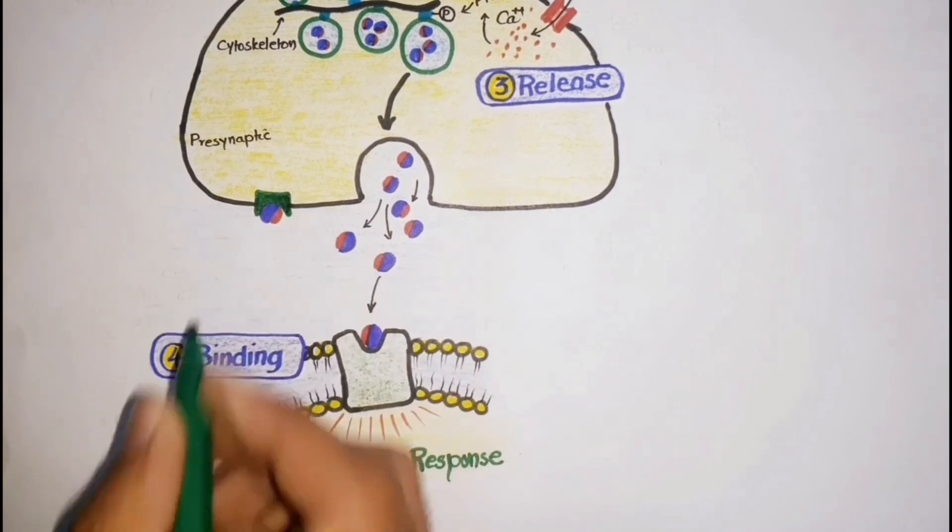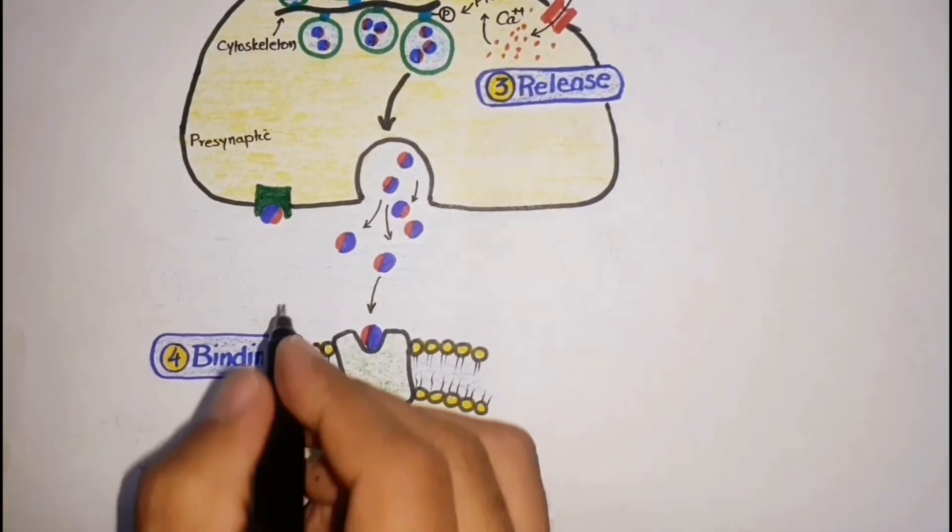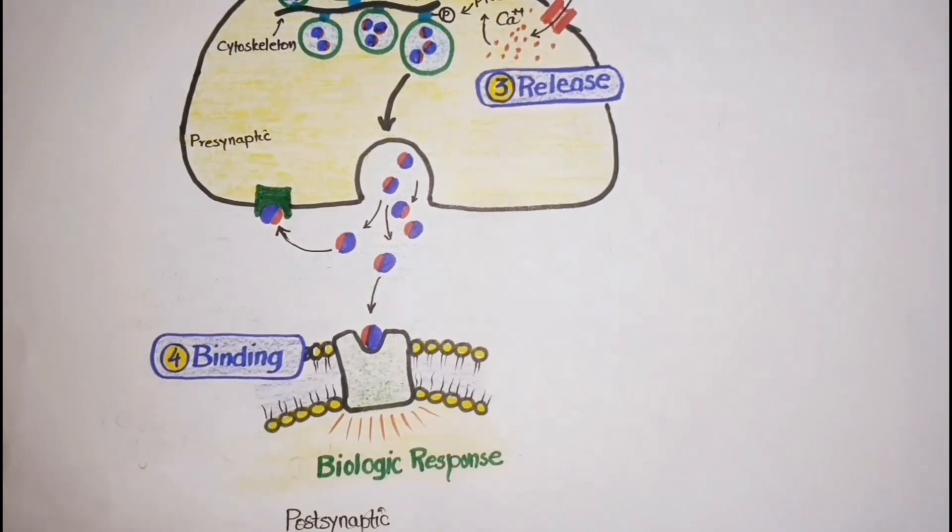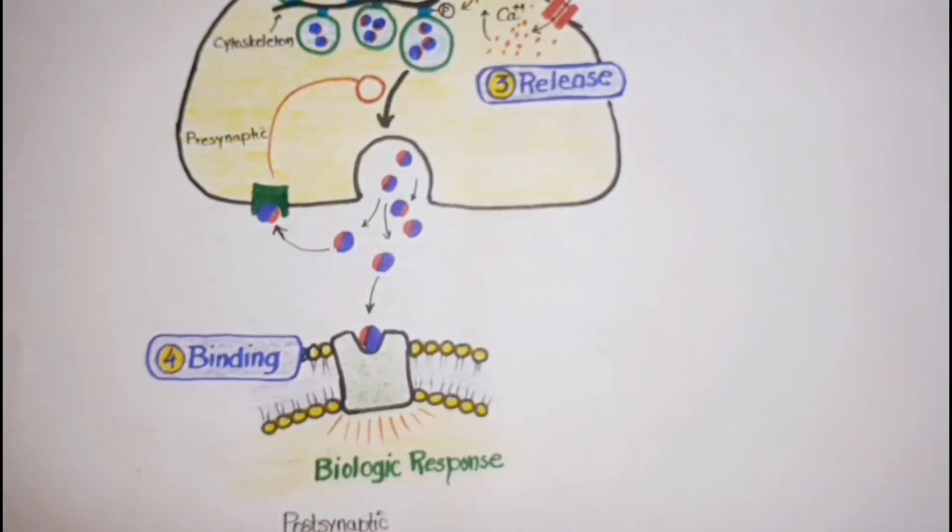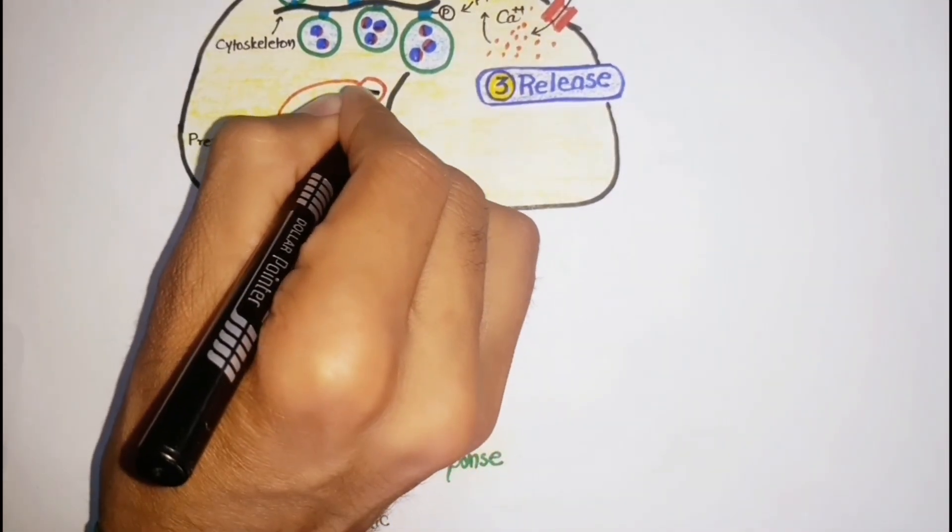Some neurotransmitter binds to receptors on the presynaptic site, which inhibit additional release of acetylcholine into the synaptic cleft.